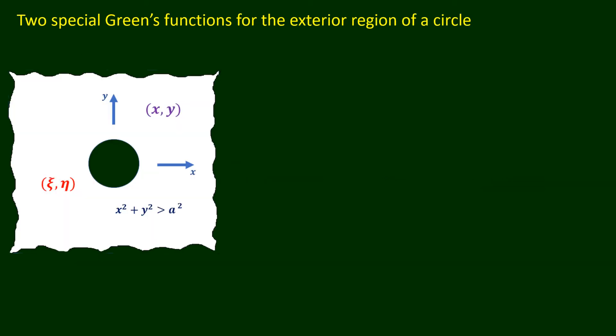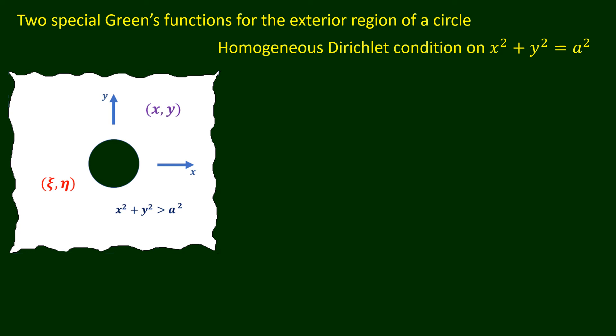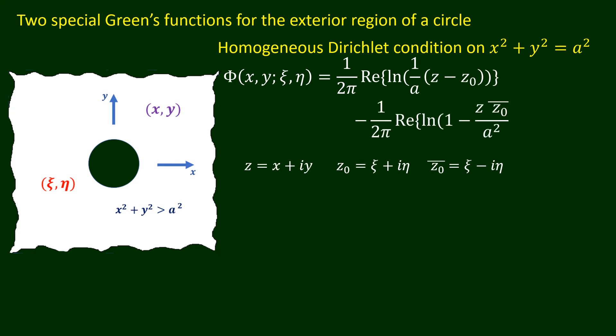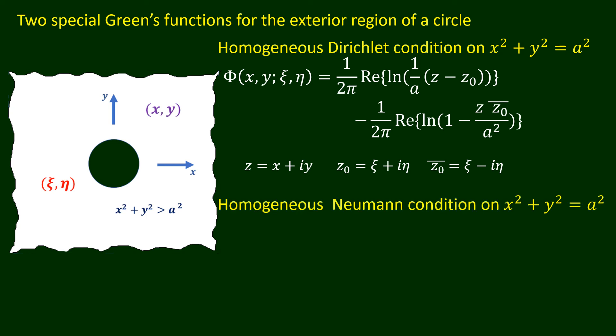The book A Beginner's Course in Boundary Element Methods gives two special Green's functions for the region exterior to a circle. The circle has radius a and its center is at the origin of the Oxy Cartesian coordinate system, that is, the region given by x squared plus y squared strictly greater than a squared. The first Green's function, expressed in terms of complex functions, for the region x squared plus y squared strictly greater than a squared, with the homogeneous Dirichlet condition on the circle, is given here. The second Green's function for the same region with a homogeneous Neumann condition on the circle is also given.